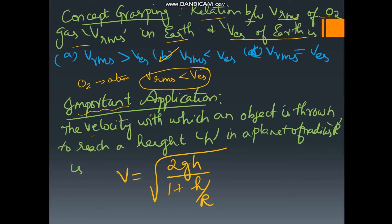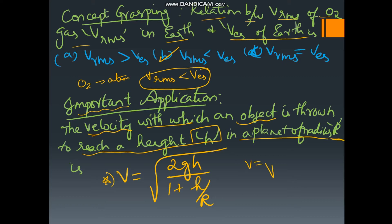For which type of question must you use this formula? The velocity with which an object is thrown to reach a height h on a planet of radius r is: v = square root of (2gh) divided by (1 + h/r). If they ask for the velocity to reach a height h from the surface of a planet of radius r, use this direct formula.